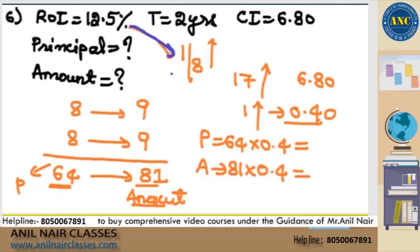12.5% is 1 by 8. Again I am explaining. Original value is 8, there is an increase of 1 on 8, it is 9. Second year also, original value is 8, there is an increase of 1 on 8, 9. 8×8 are 64.